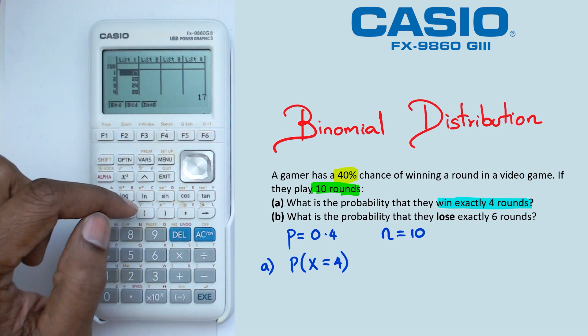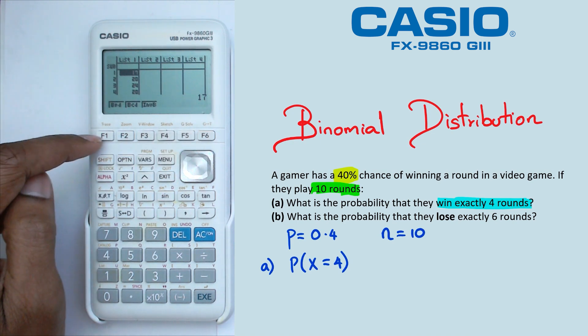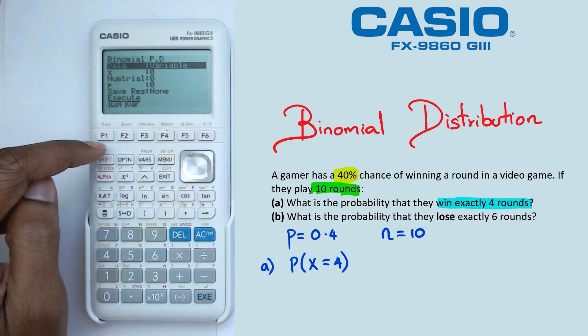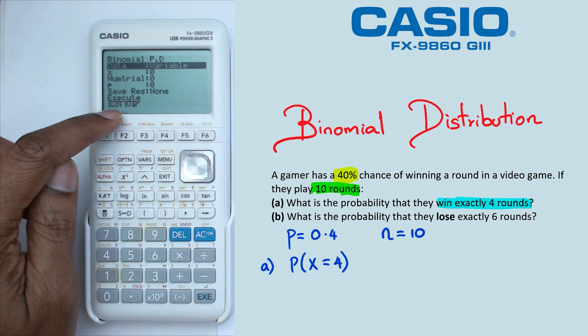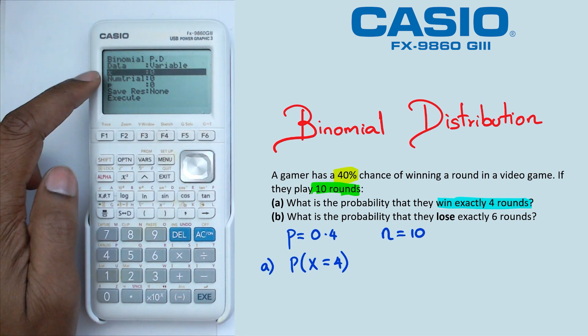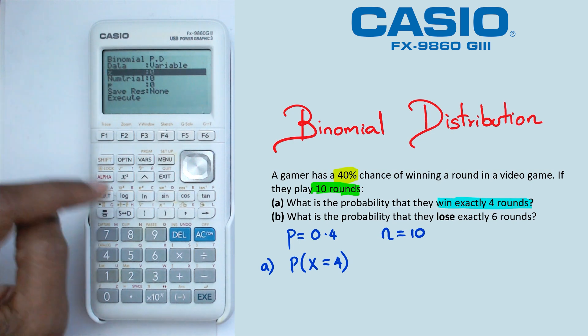And for these questions, we're going to use BPD, which is in F1. So we're going to click on that and make sure that we choose variable and not list. We're going to go down to x, which in this case is winning exactly four rounds. So x is equal to 4.